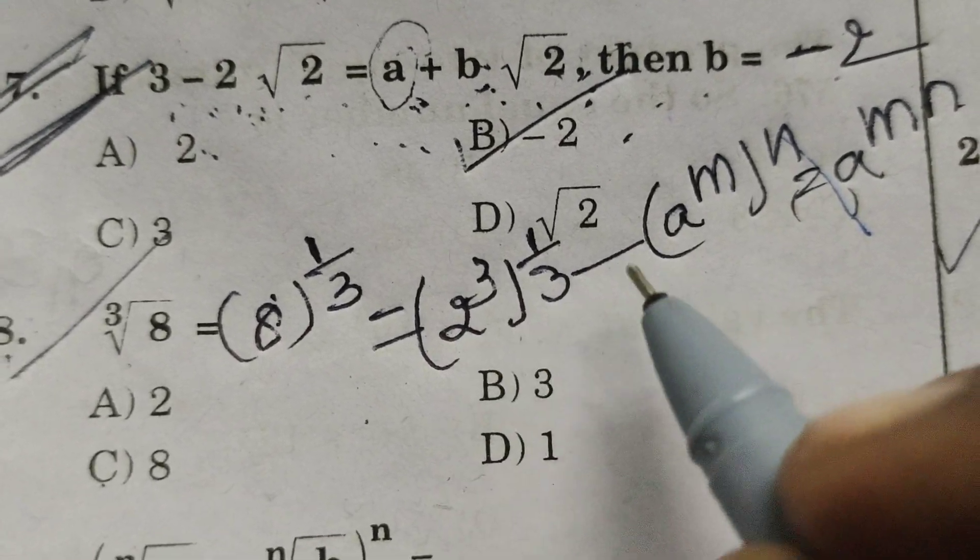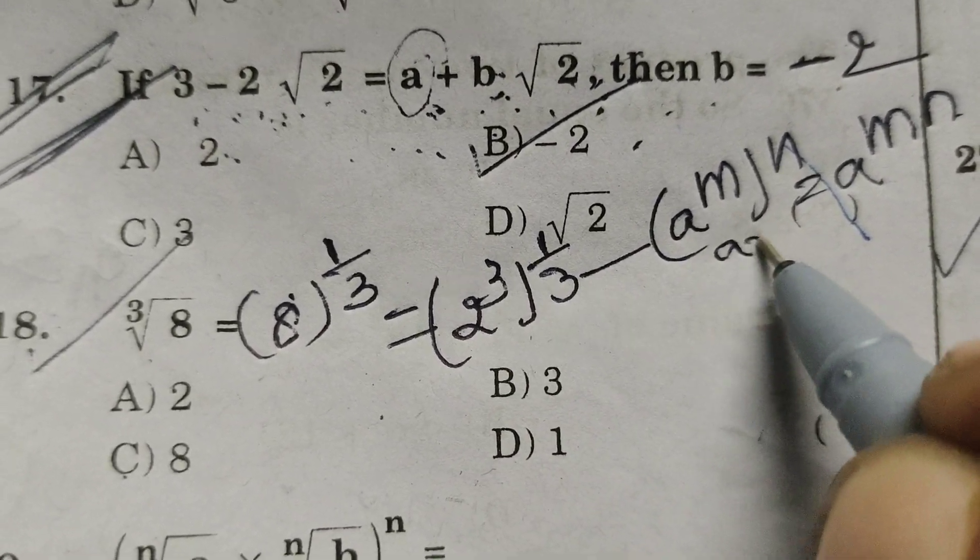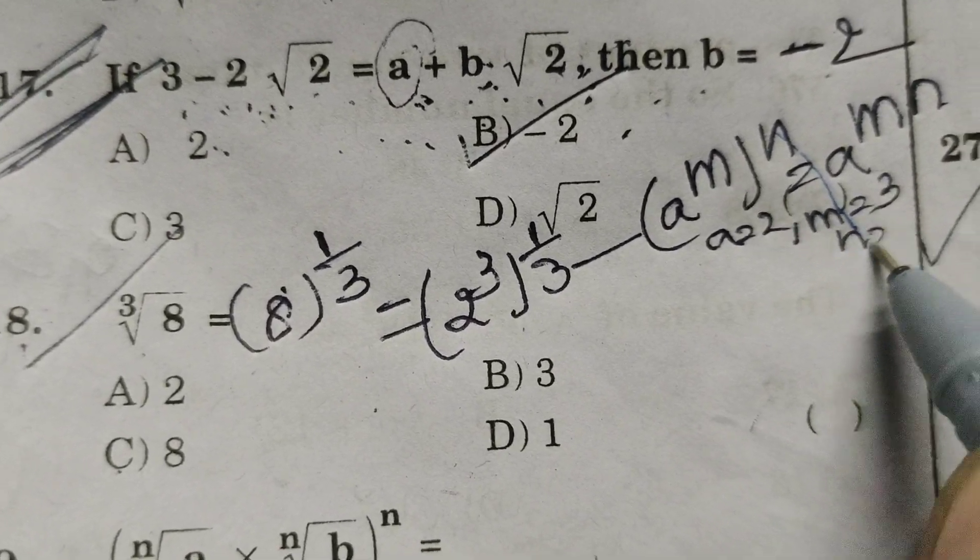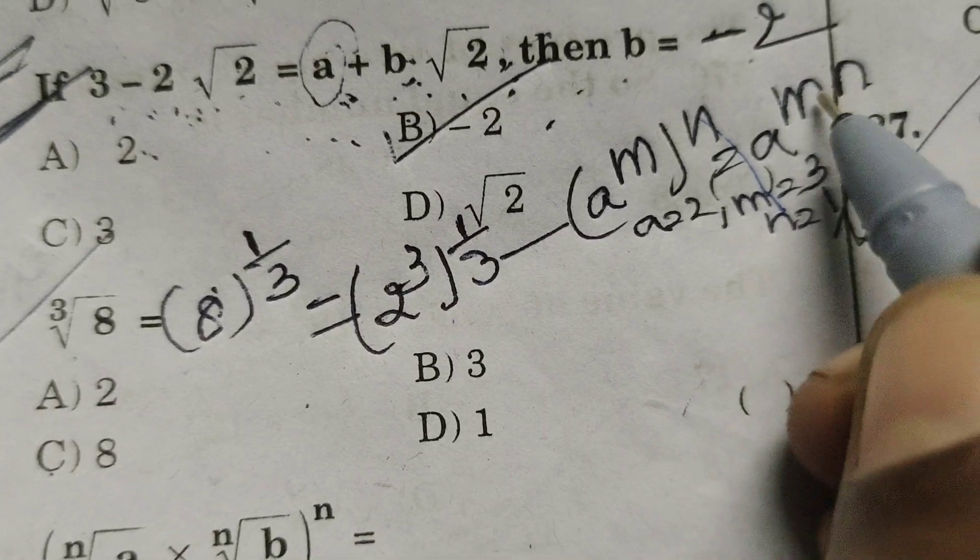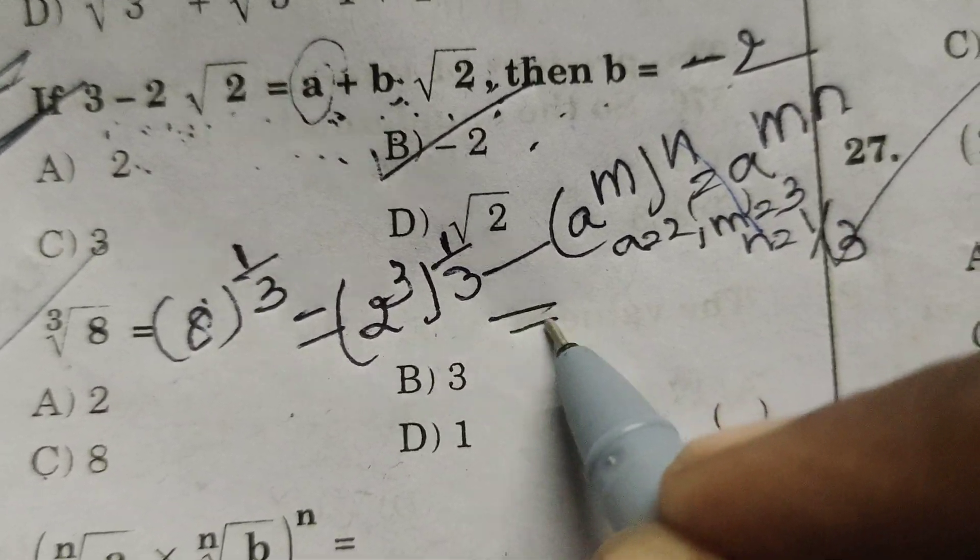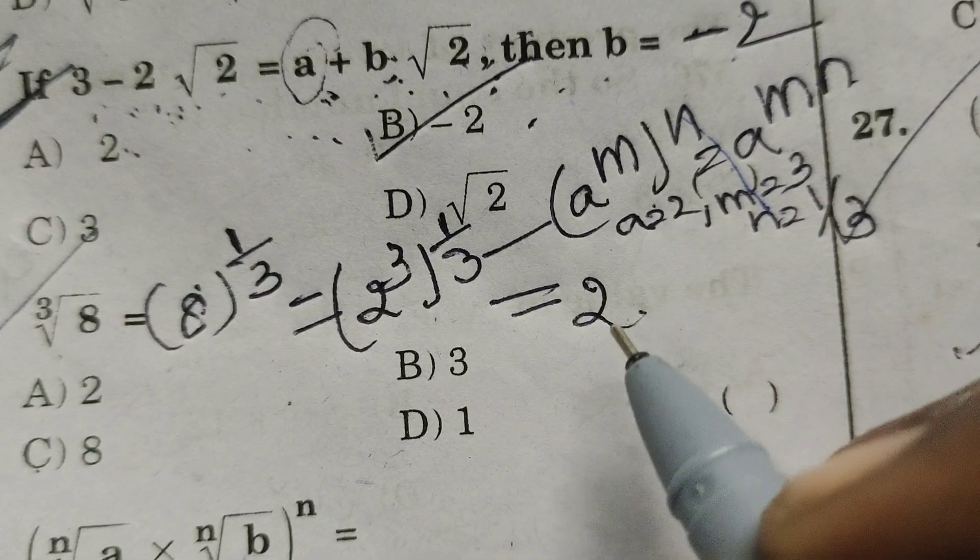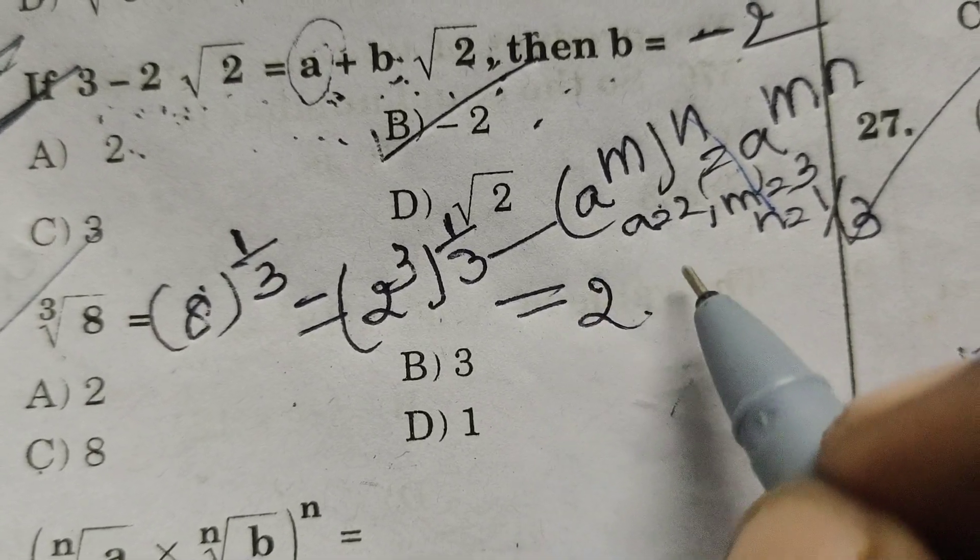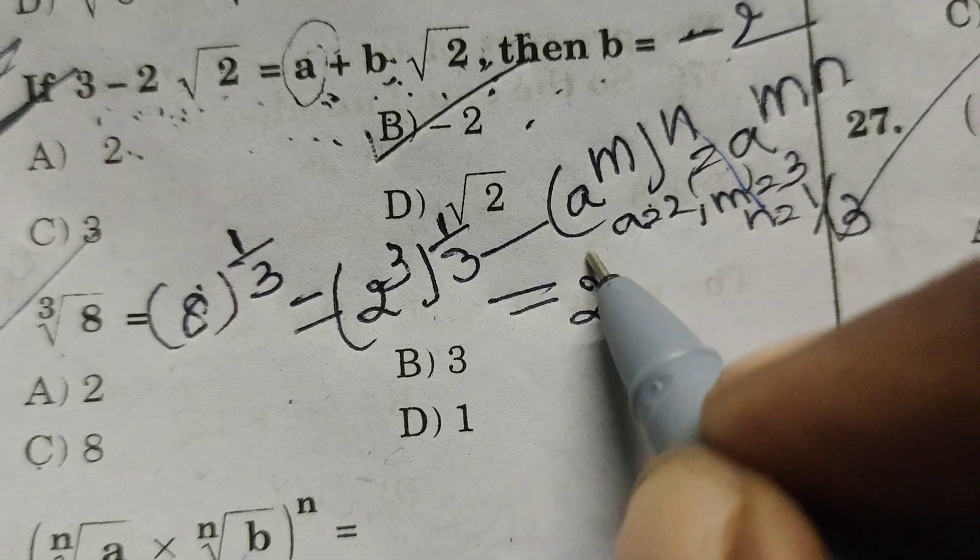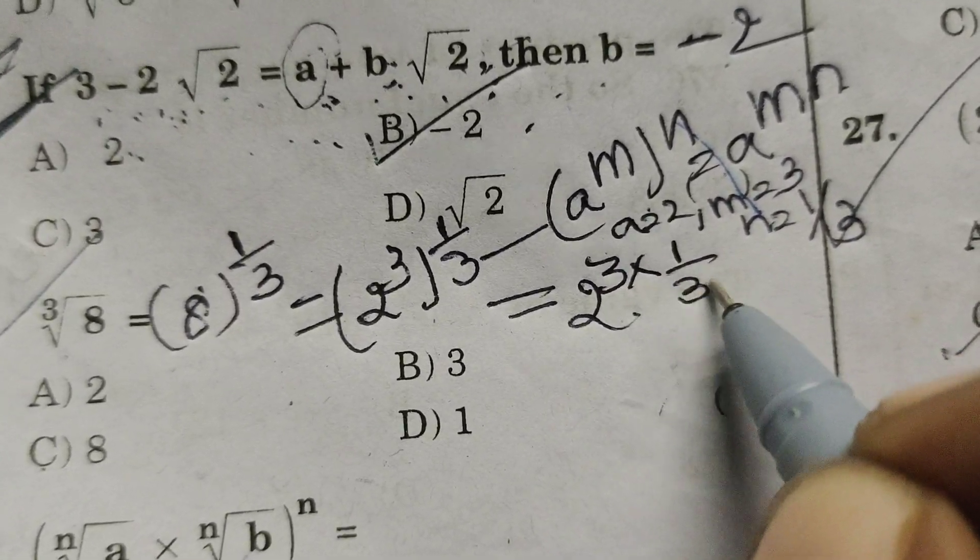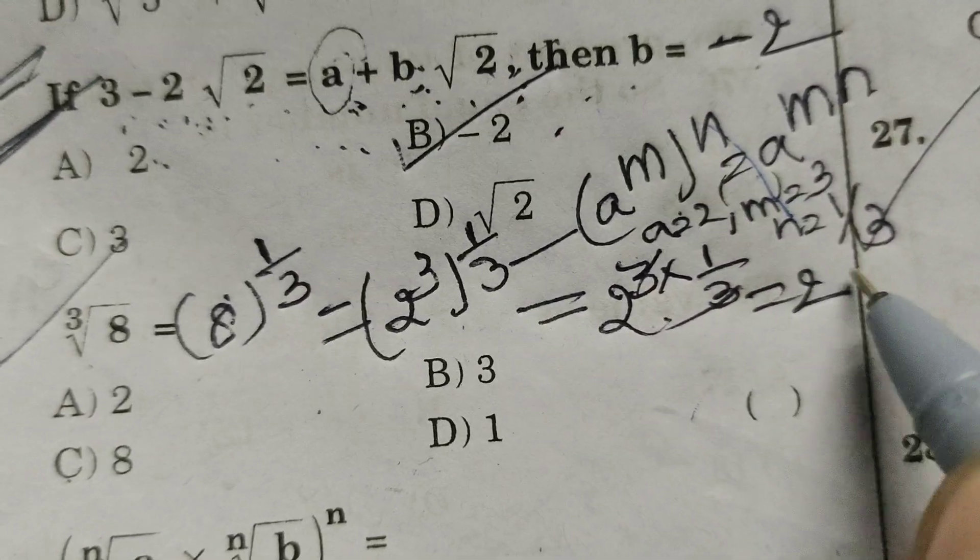Now here A means 2, M means 3, n means 1 by 3. Here I write A power mn. What is A? 2 power mn. What is m? 3 into n, what is n? 1 by 3. 3 gets cancelled, that is 2.